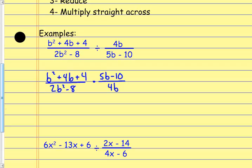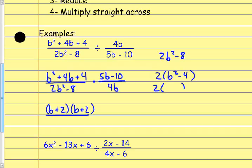I factor everything completely. The first numerator factors into (b+2)², which is (b+2)(b+2). In the denominator it's going to have two steps — I factor out the 2, which leaves me with b²−4, and b²−4 is a difference of squares: (b+2)(b−2). So factored completely, bringing this back, that's (b+2)(b−2).